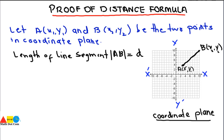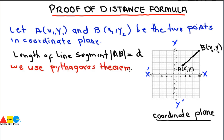In order to find the distance, we make use of the Pythagorean theorem. You can also say that the distance formula is the application of the Pythagorean theorem. The Pythagorean theorem is used for a right-angle triangle, so we have to construct a right-angle triangle.